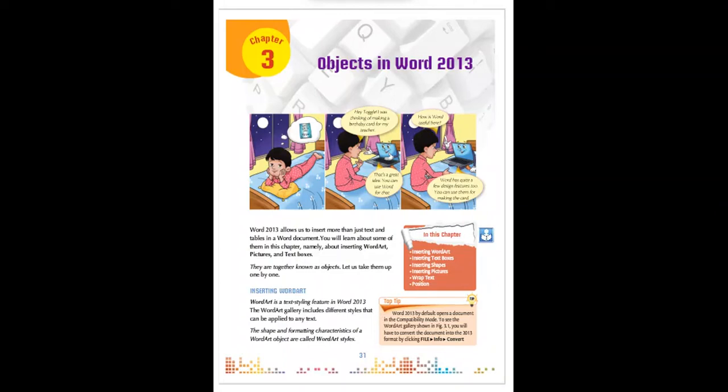Today, we are going to start with our subject Computer of Class 5th, Chapter 3: Objects in Word 2013. Word allows us to insert more than just text and tables in a Word document. You will learn about some of them in this chapter, namely about inserting WordArt, pictures, and text boxes. They are together known as objects. Let us take them up one by one.